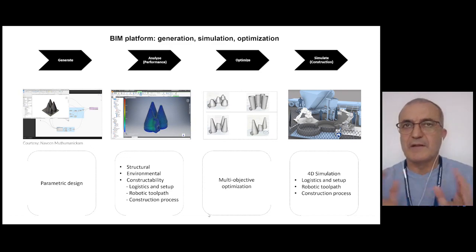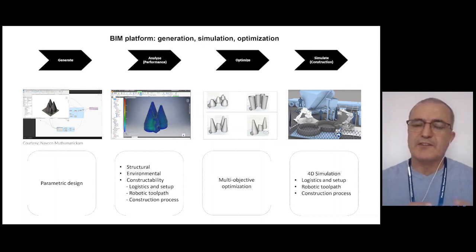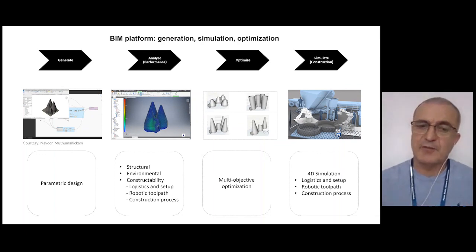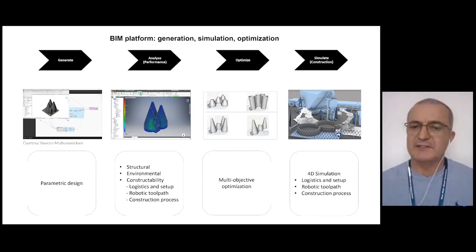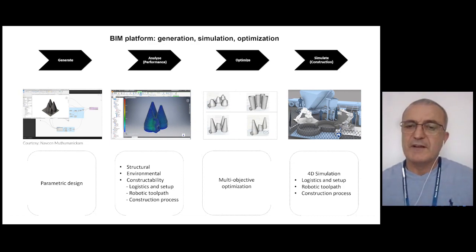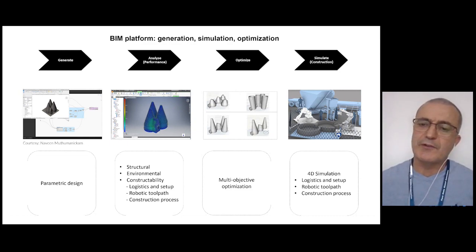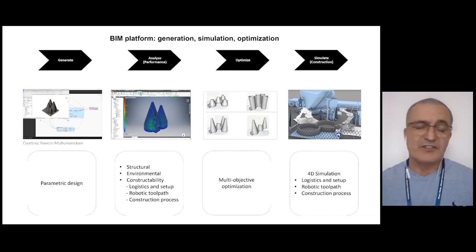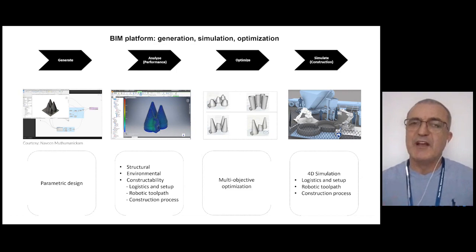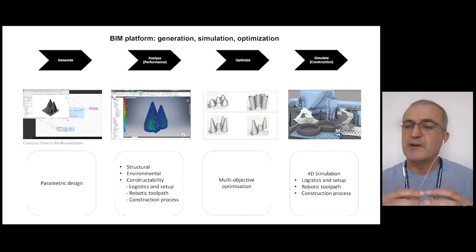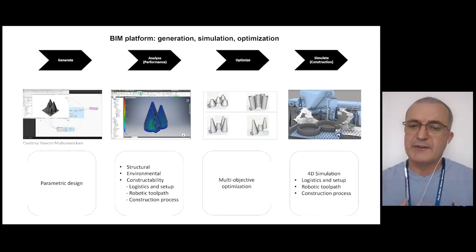The platform also includes a module that checks for the performance of the design being generated — structural performance, environmental performance, and constructability. Then optimization is used to find the solution with best overall performance. Finally there is a 4D construction simulation module to see how construction will evolve over time and guarantee that robots will not collide during the construction process.